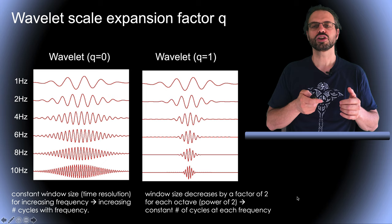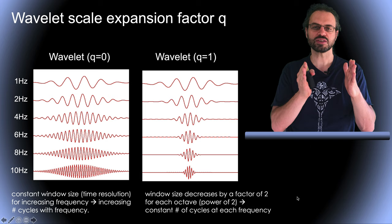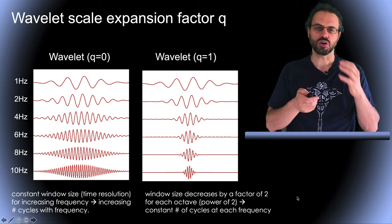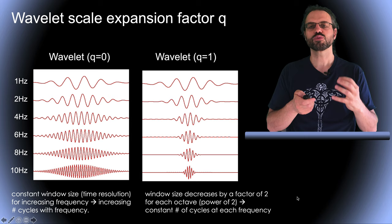On the other extreme, on the right, a scale expansion factor of one will keep the number of cycles constant while decreasing the size of the window. Again, the first wavelet produces low time resolution and high frequency resolution for low frequencies in the EEG, and the second one, high time resolution and low frequency resolution for high frequencies in the EEG.